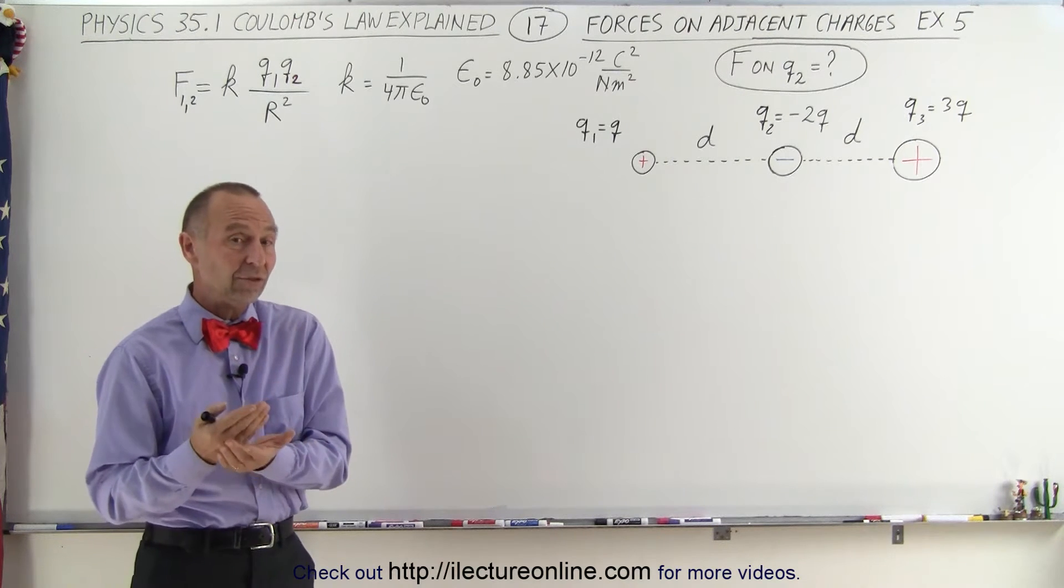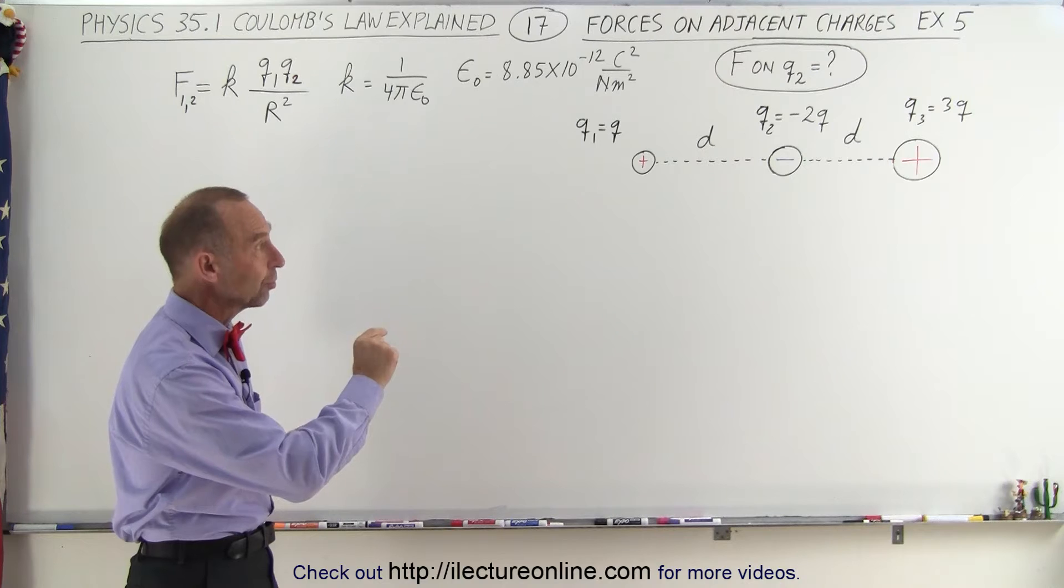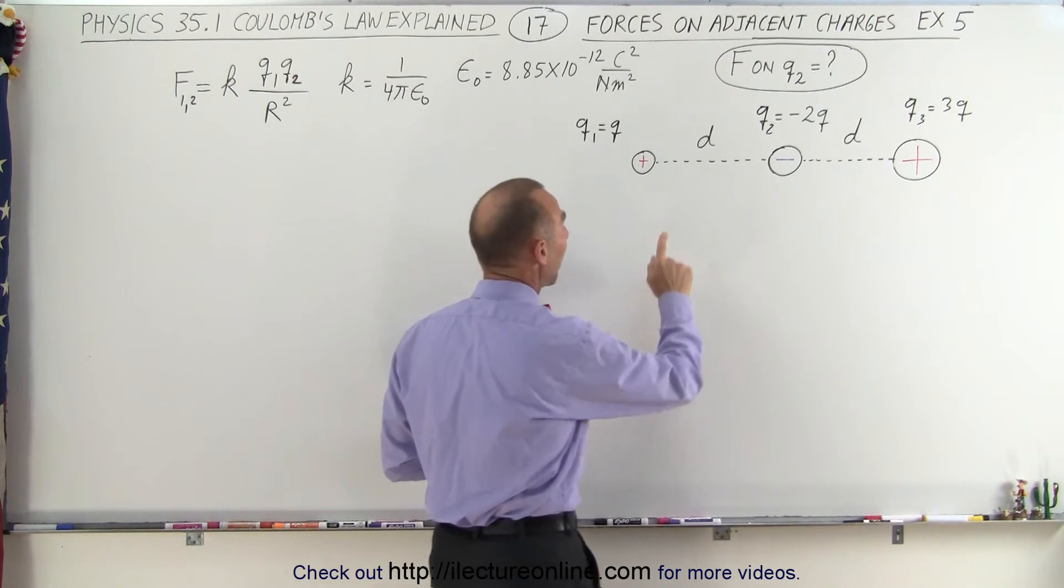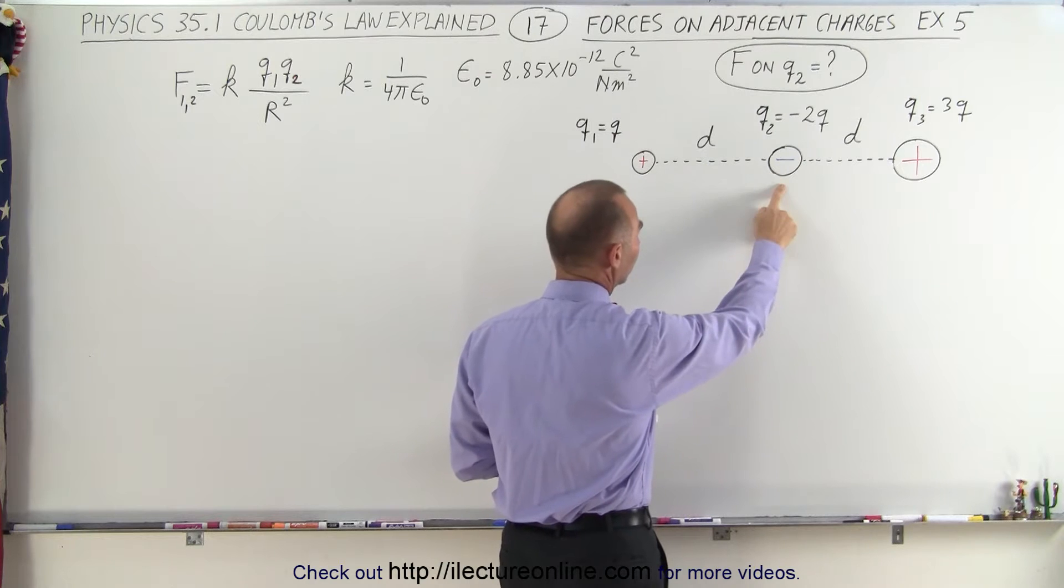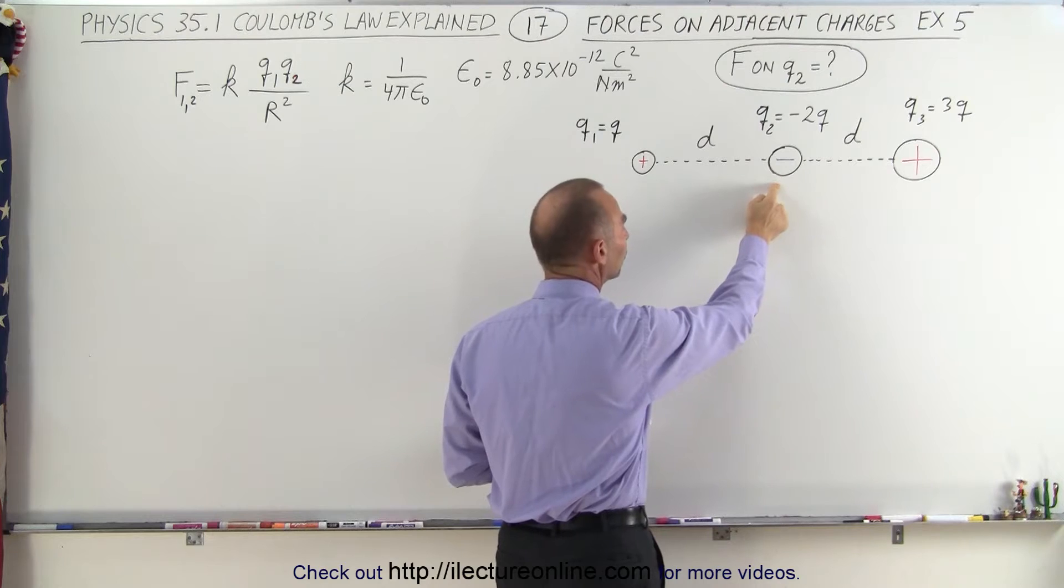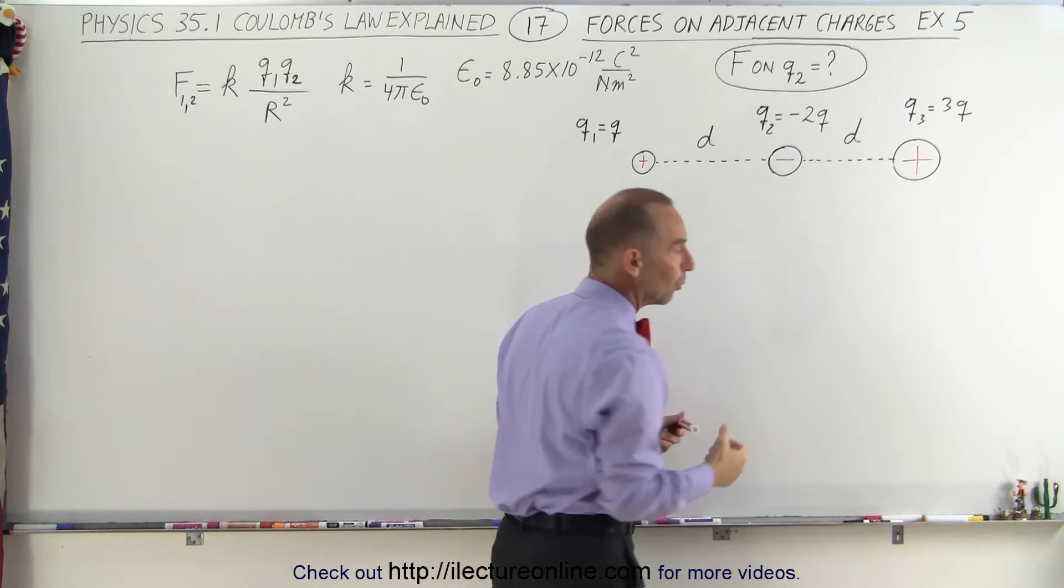The best place to start is by drawing the vectors representing the forces between each of the two interactions. First we'll see how Q1 affects Q2. Since they're oppositely charged, Q1 will pull on Q2, and of course Q2 will pull on Q1.